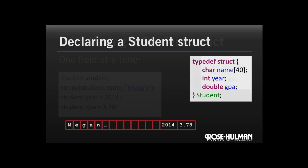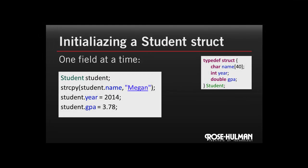How would we initialize the struct? There are a few different ways. The first and maybe simplest way is just to do one field at a time. We declare student to be of type Student, and then give values to the name, the year, and the GPA. To get a value into a string, we need to do a copy — the library function strcpy is used; we'll talk about that in a later video. Notice that in each case we use the dot operator, as in Python or Java, to get at the fields. So we say student.GPA = 3.78.